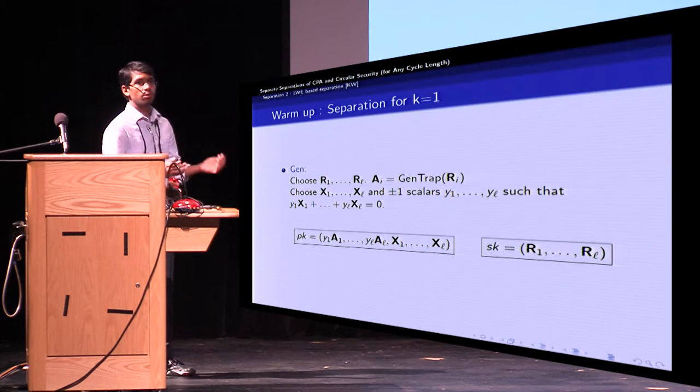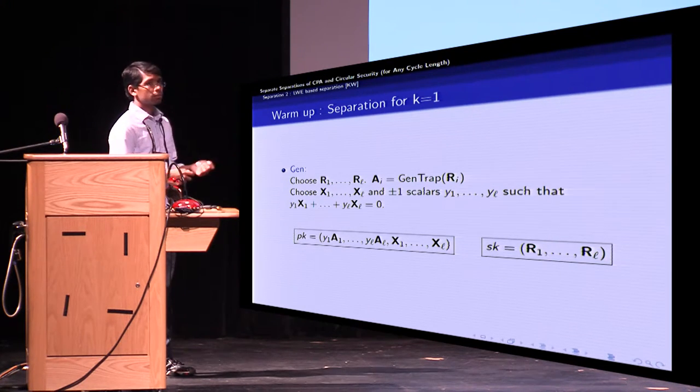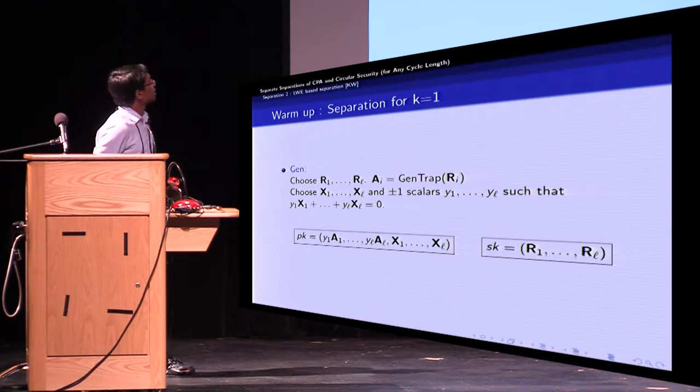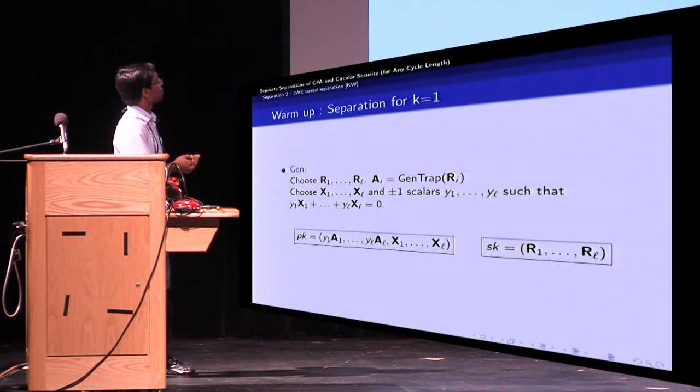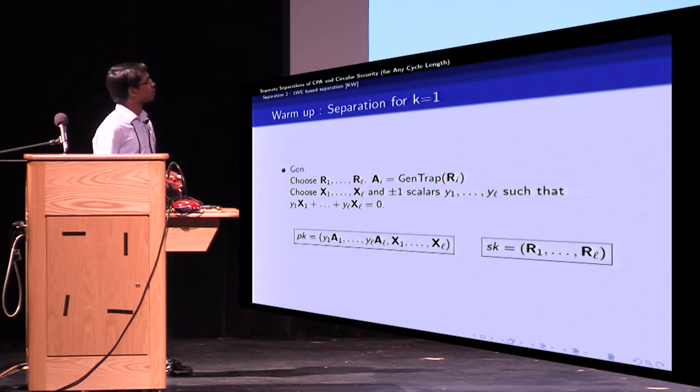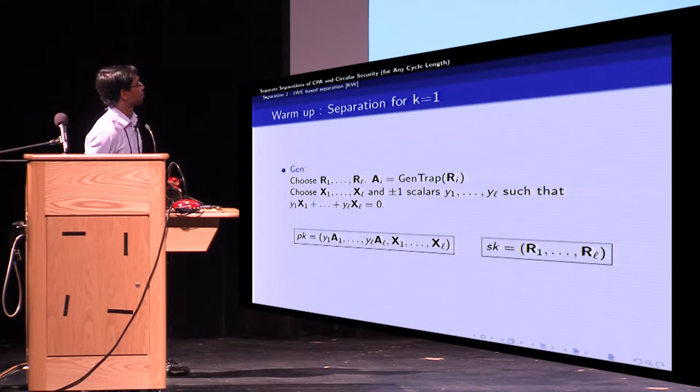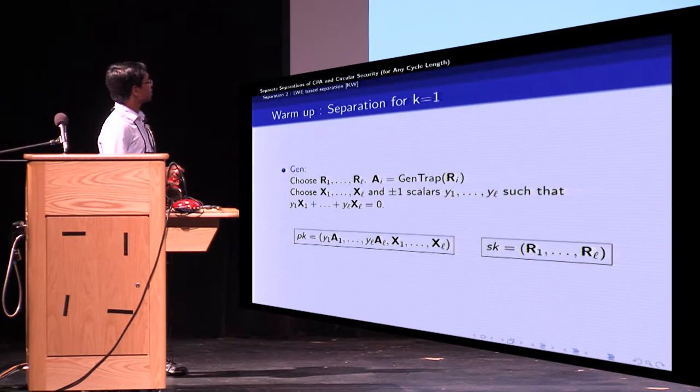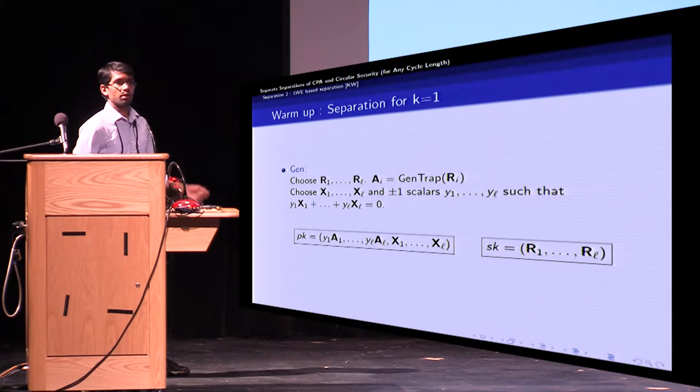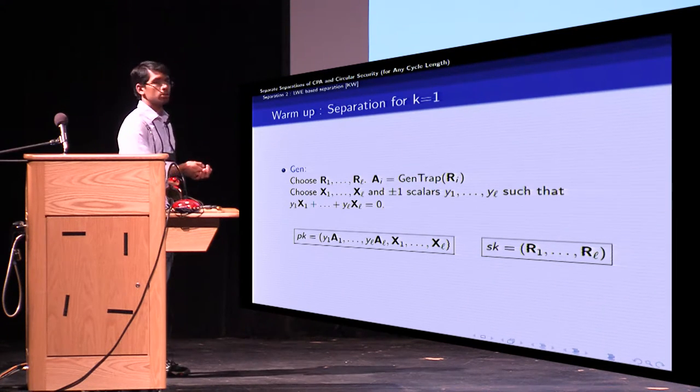This chooses a large number of random matrices R_1 to R_L, uses each of these matrices as randomness for generating the A_i matrices using the GenTrap algorithm. Next, it chooses a large number of matrices X_1 to X_L and plus minus one scalars Y_1 to Y_L which are random subject to the condition that summation Y_i times X_i is equal to zero. The public key consists of two L matrices, the first L are Y_i times A_i, and the remaining L are the X_i matrices. And the secret key is simply the randomness used for generating the A_i.